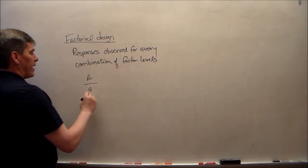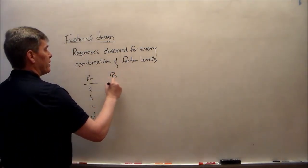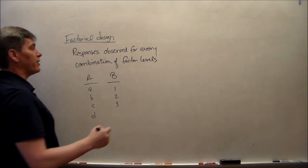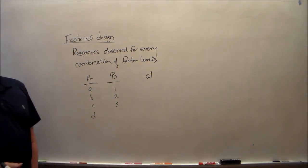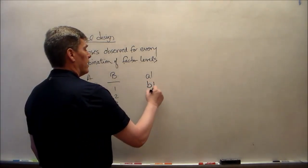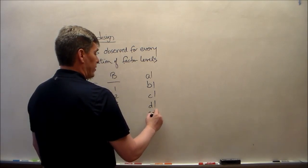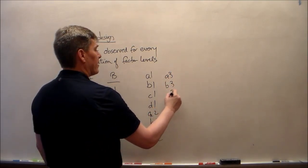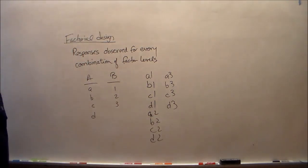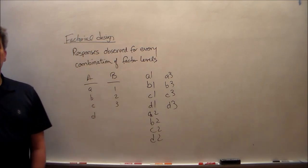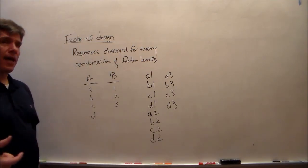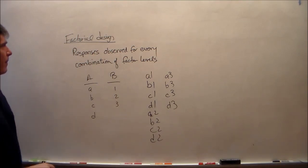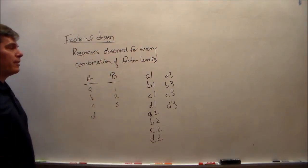For example, if variable A has levels A, B, C, and D, and variable B has levels 1, 2, and 3, then we need to observe a response for every combination: A1, B1, C1, D1, A2, B2, C2, D2, and so on. We should also observe more than once — at least twice — because that gives us a better estimator for our overall variance.